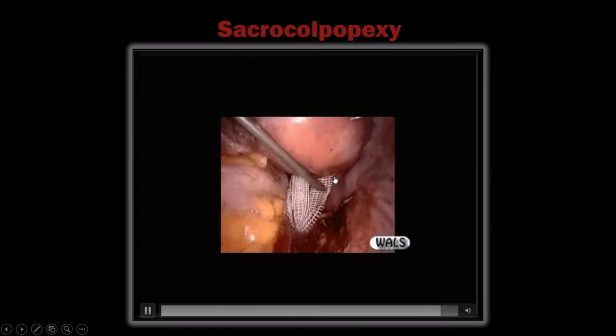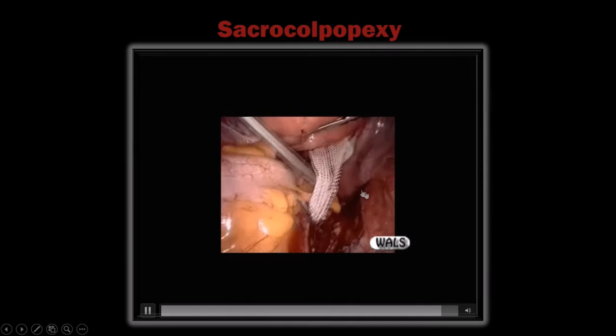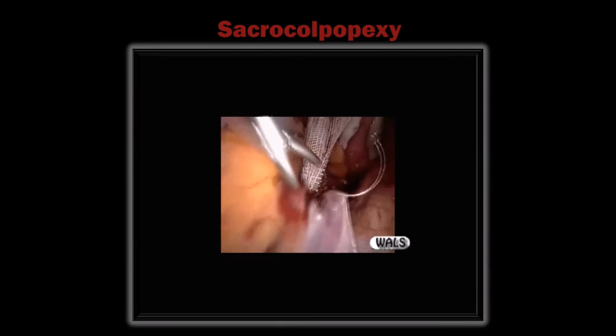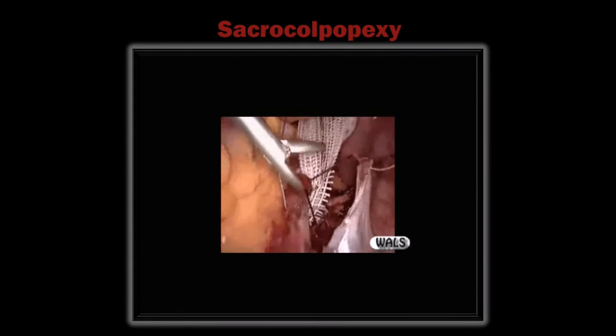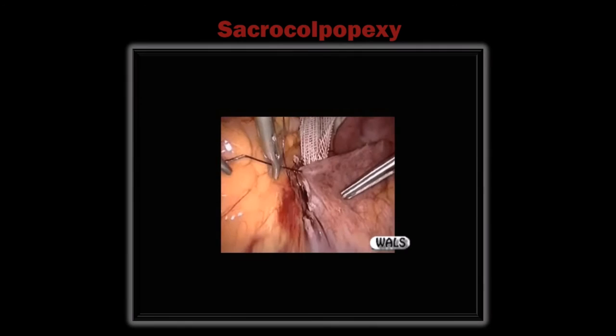You can now see the tube, ovary, sigmoid colon, and rectum. Close the peritoneum here so the mesh is completely hidden. This is the last step: closure of the peritoneum just like in hysterosacropexy — Dundee jamming knot, continuous suturing, or Aberdeen termination. This is the end of the surgery.